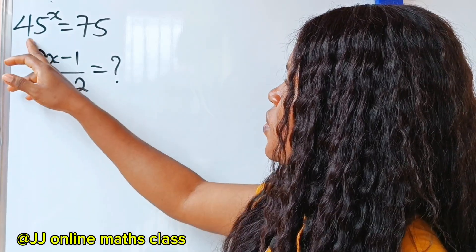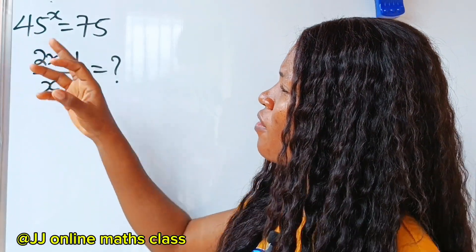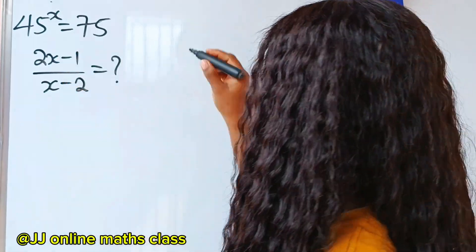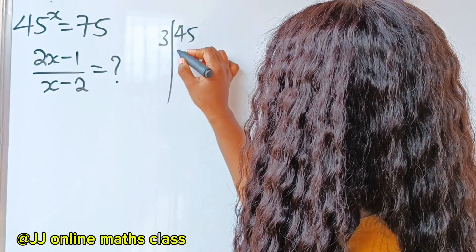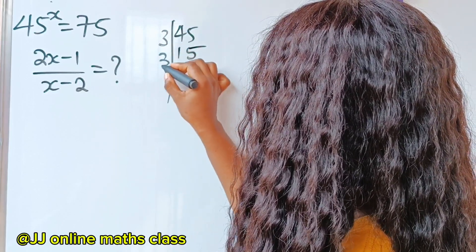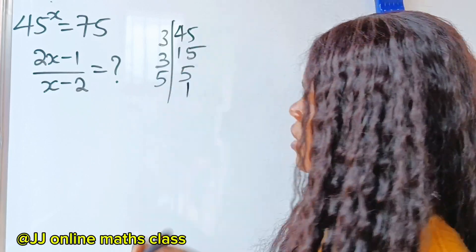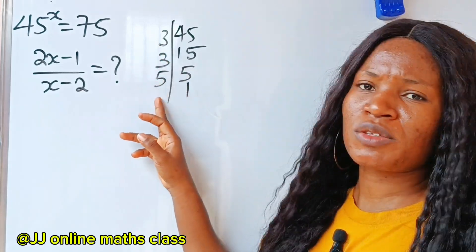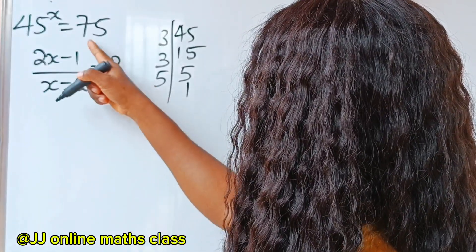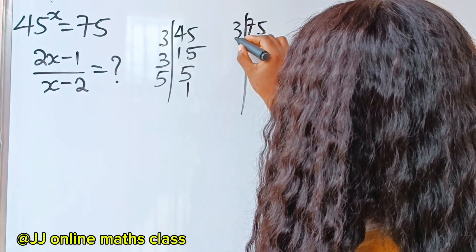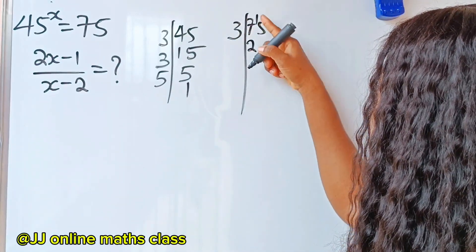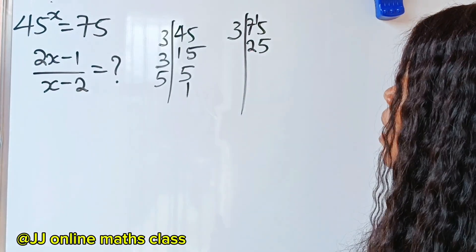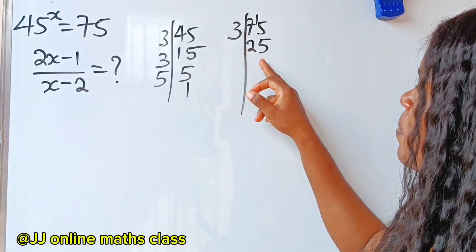When I saw this question, the first thing that came to my mind is I can split 45 into 3s and 5s, the same with 75. Dividing 45 by 3 gives 15, dividing again by 3 gives 5, then by 5 gives 1. So 45 = 3² × 5. Checking 75: dividing by 3 gives 25, and 25 = 5². So 75 = 3 × 5².